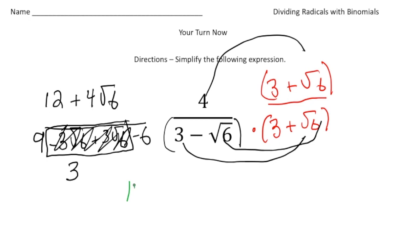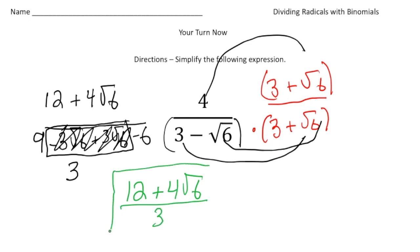So our final answer is going to be 12 plus 4 times the square root of 6, divided by 3. Some people might want to reduce that even more, but for now that's good enough. If you had that, you did a great job!